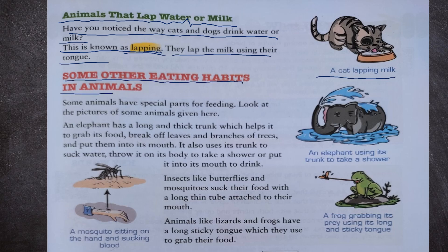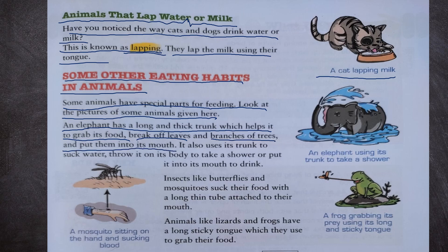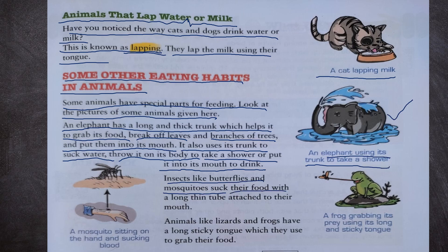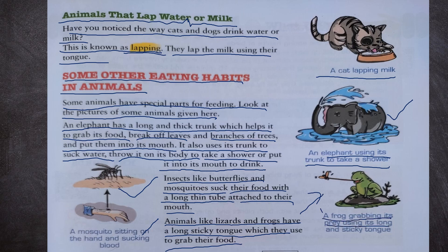Some animals have special parts for feeding. An elephant has a long and thick trunk which helps it to grab its food, break off leaves and branches of trees and put them into its mouth. It also uses its trunk to suck water, throw it on its body for a shower, or put it into its mouth to drink. Insects like butterflies and mosquitoes suck their food with a long thin tube attached to their mouth. Animals like lizards and frogs have a long sticky tongue which they use to grab their food.